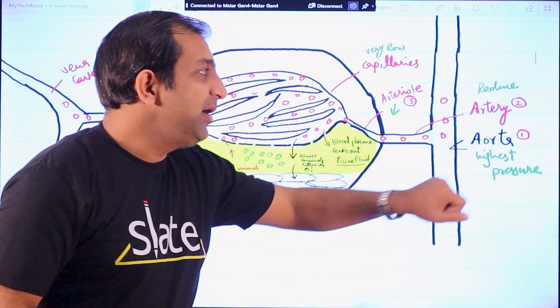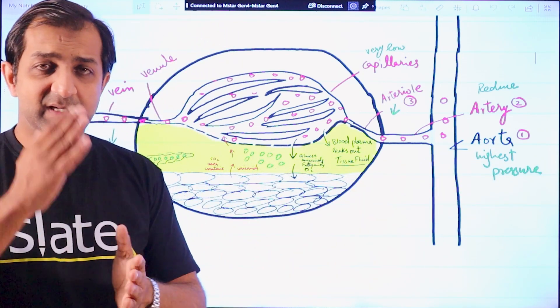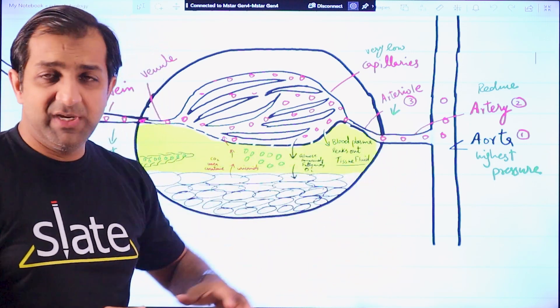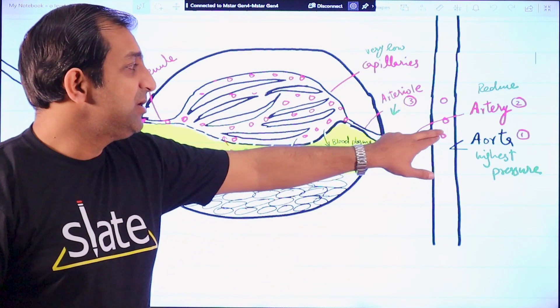So number one, this aorta has the highest pressure of blood since it's coming directly from the left ventricle. Then we have this artery. This artery connects this aorta to an organ.